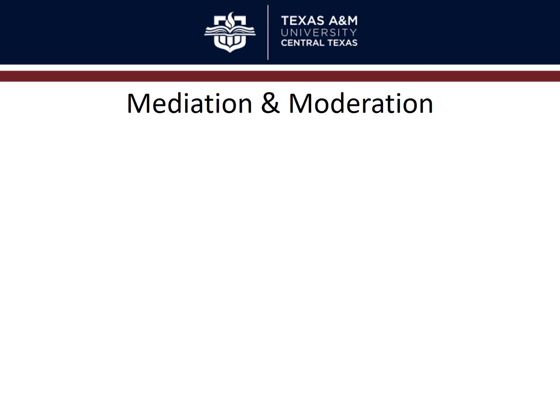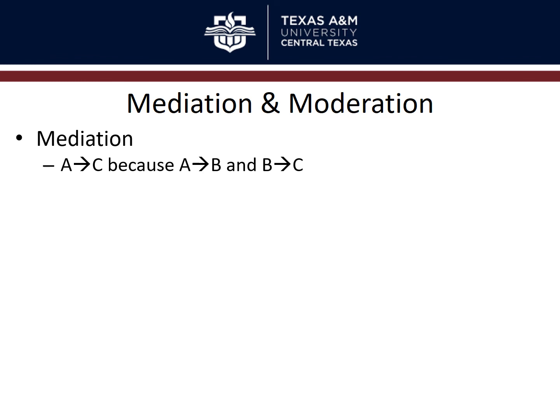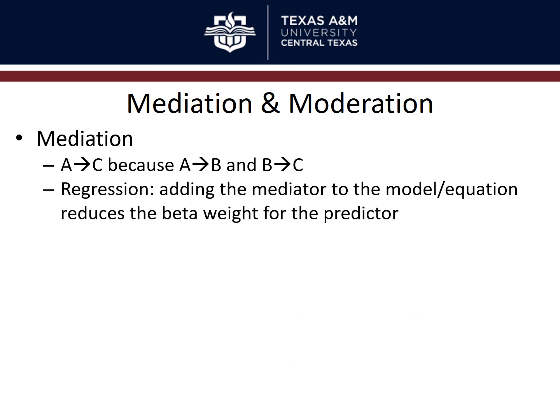Mediation and moderation are two other things you can examine with multiple regression in correlational studies. Mediation is when there's a relationship between A and C, but only because A is related to B and B is related to C — in a causal direction. In regression, you identify mediation when adding the mediator B to the model reduces the beta weight for predictor A. If adding B makes A's beta weight non-significant or smaller, that's evidence that B is playing a mediatory role.